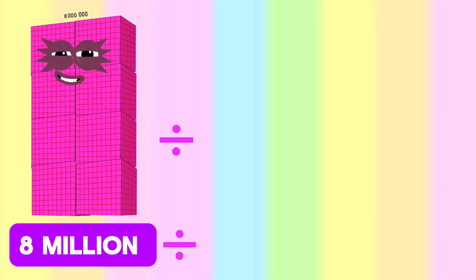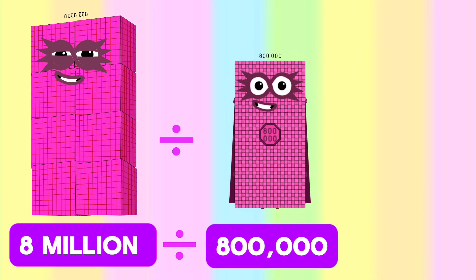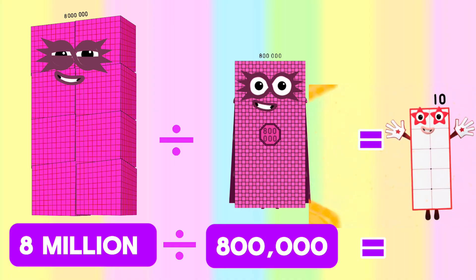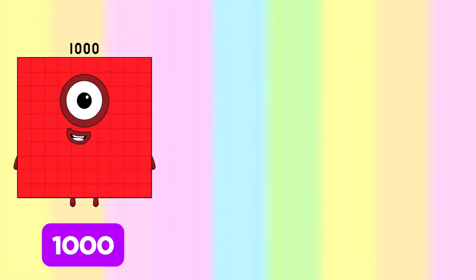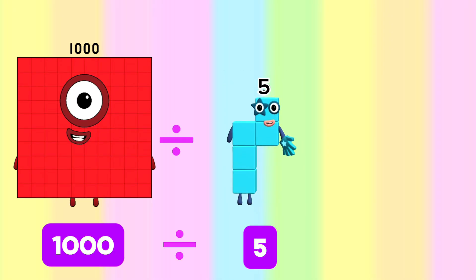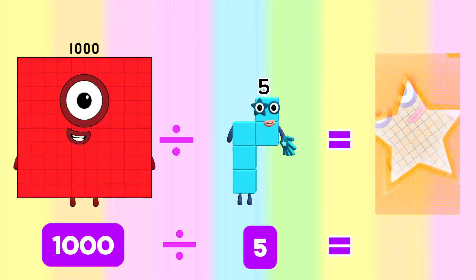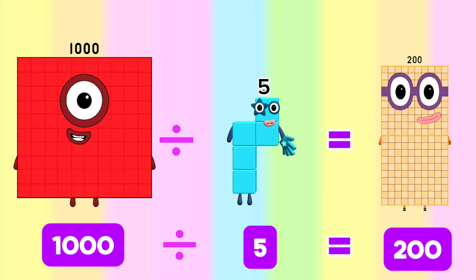8,000,000 divided by 800,000 is equals to 10. 10,000,000 divided by 5 is equals to 200.